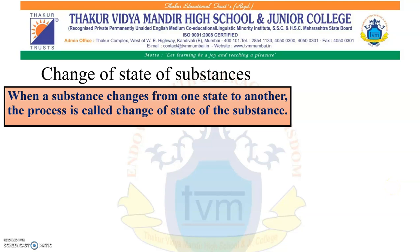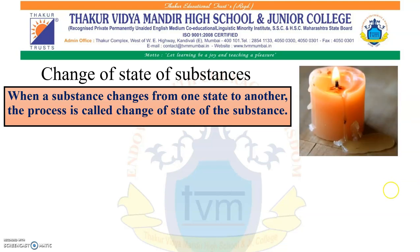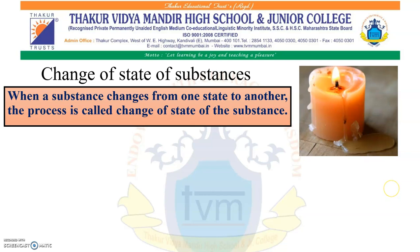Let us understand this with the help of one example. As shown in the picture, there is a candle. The candle itself is in solid state. When we light up the candle, the wax starts melting. The melted wax is in the liquid state. When that melted wax cools, it again turns into solid state. So from solid to liquid and from liquid to solid — this is the change of state.